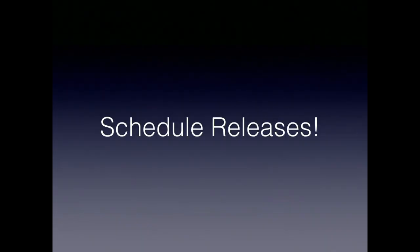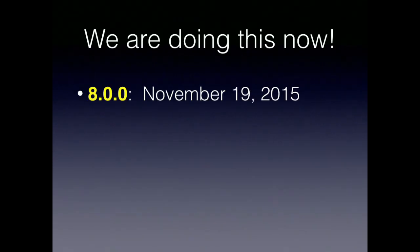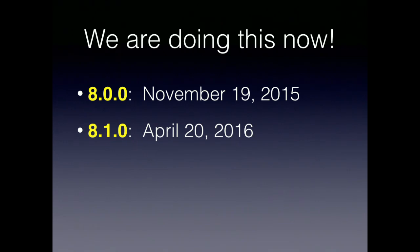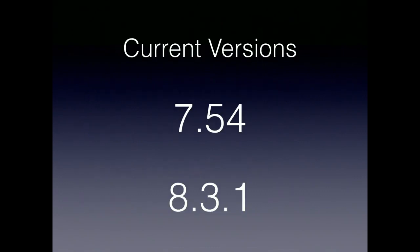So the release schedule post-Drupal 8: we actually have scheduled releases every six months. 8.0.0 came out in November 2015, then 8.1 in April 2016, 8.2 came out October 5th 2016, and then just recently 8.3.0 came out. The Drupal community has been hitting pretty close to the six-month mark. Current versions right now are 7.54 and 8.3.1. You'll notice Drupal 7 has two portions to the version number but Drupal 8 has three.